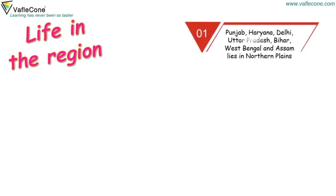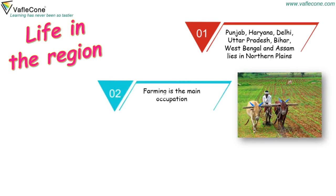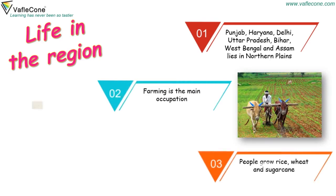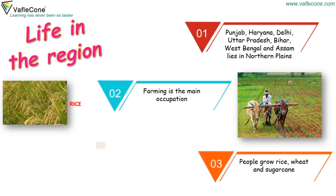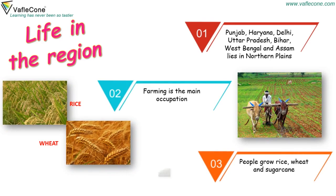Life in the region: Punjab, Haryana, Delhi, Uttar Pradesh, Bihar, West Bengal, and Assam lie in the Northern Plains. Farming is the main occupation. People grow rice, wheat, and sugarcane.